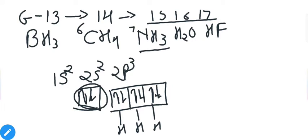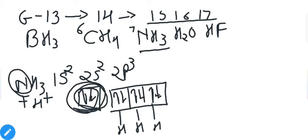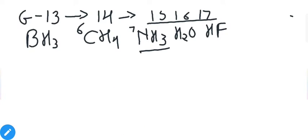After bonding in NH₃, there remains one lone pair that is not used in bond formation. If the need arises, nitrogen can use it — that is why it is called an electron rich compound. When NH₃ reacts with H⁺, nitrogen uses its lone pair, donating it to the empty orbital of H⁺ to form NH₄⁺. This is why nitrogen forms a coordinate covalent bond with H⁺.